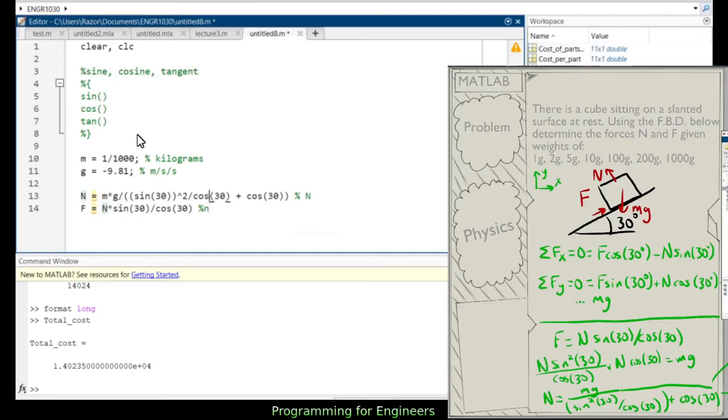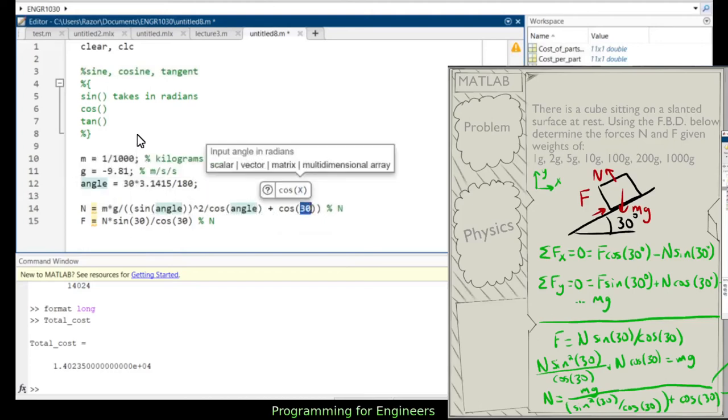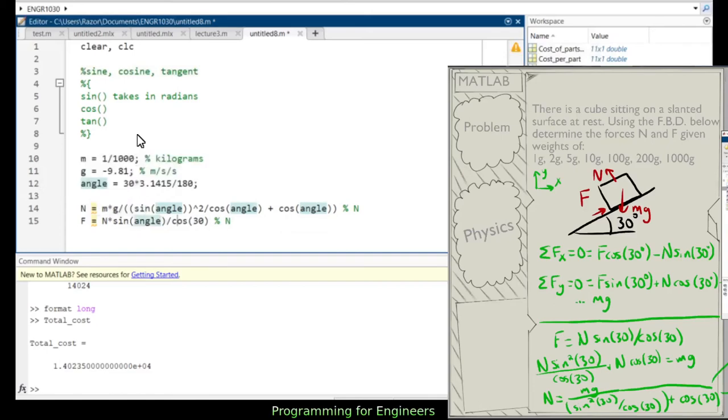And right here there's one more thing I need to remember, and that's these functions work in radians, not degrees. So right now I'm filling in degrees. So what I'll do here is I'll say angle equals 30, and I'll multiply it by pi, 3.1415, and divide it by 180, because that's the conversion from angles to radians. So instead of 30 here, I can just do angle. Angle, angle, angle, angle, angle.